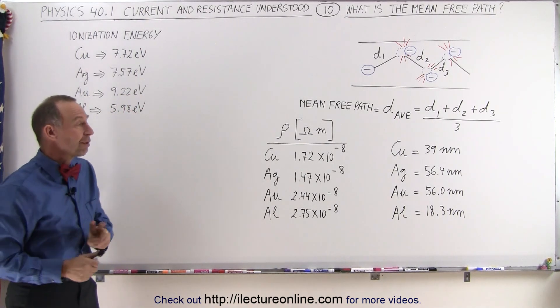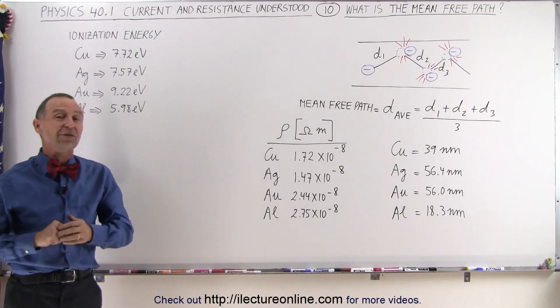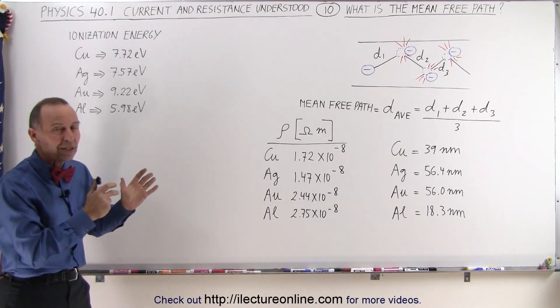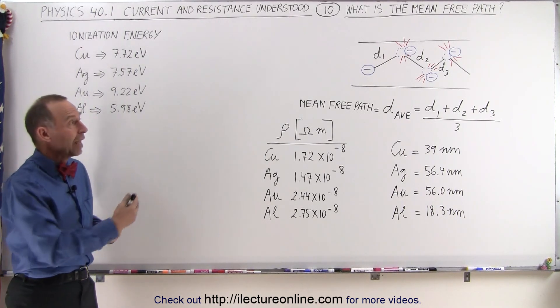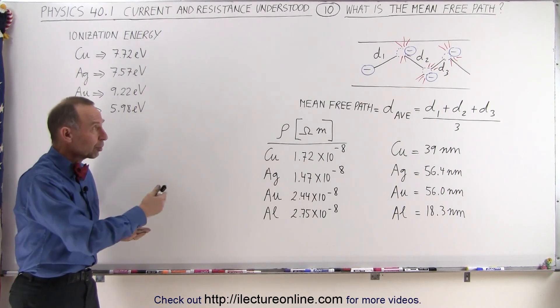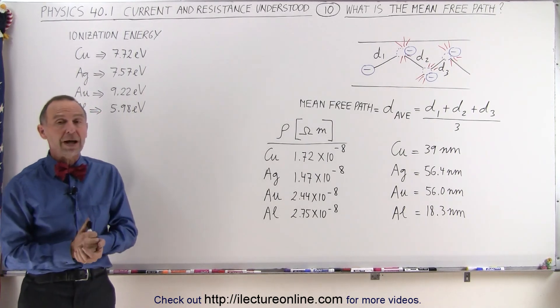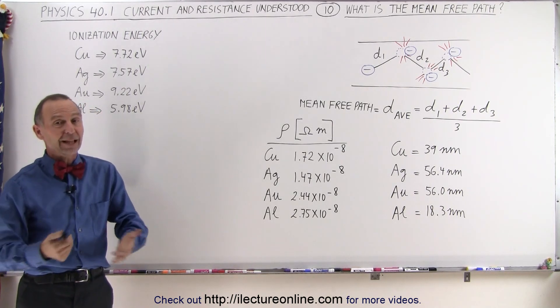And again there's only two of the three factors, we'll look at the third factor in a future video, but now at least you get to see why you would have a good conductor or a poor conductor also based upon the mean-free path. And that's how it works.